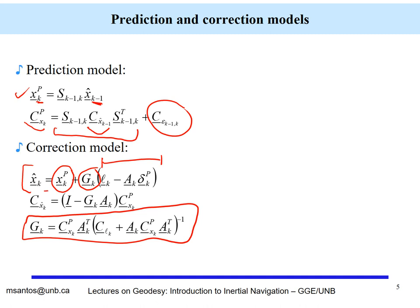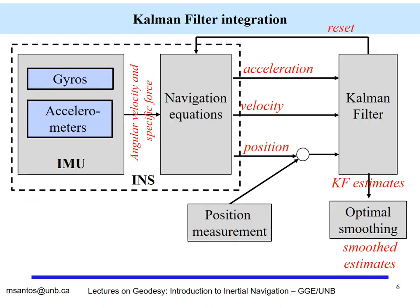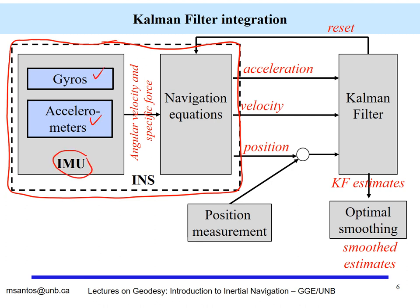The gain is given by this expression, and the final covariance matrix of the parameters can also be computed from this expression. This block diagram represents integration using Kalman filter. We have seen what happens inside an inertial navigation system: the instruments — the gyro and accelerometers mounted in the IMU — provide angular velocity and specific force, which is basically the acceleration and the attitude, then integrated into the navigation equations.